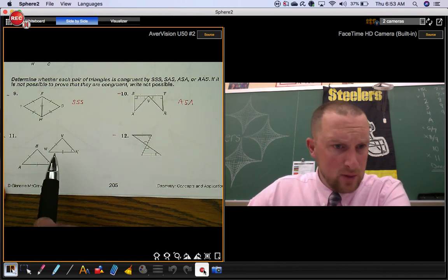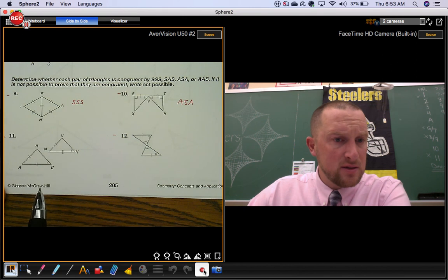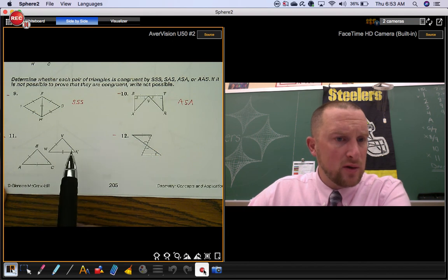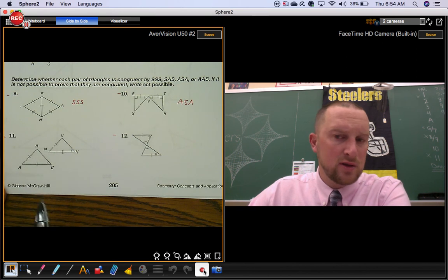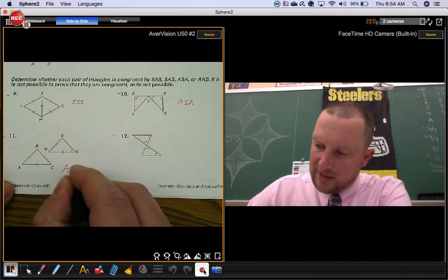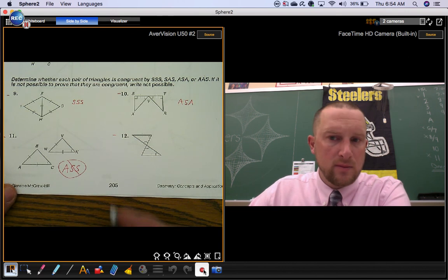Number eleven, we have two pairs of congruent sides and we have a pair of congruent angles. So that could be side angle side. But notice where the congruent angles are. The congruent angles are not included between the congruent sides. So it's this guy. ASS does not show the triangles are congruent.